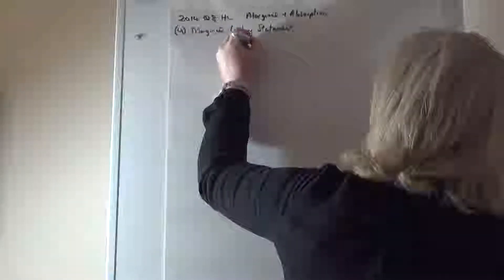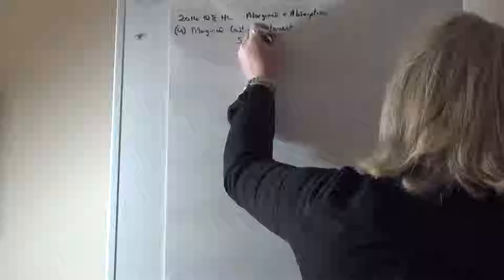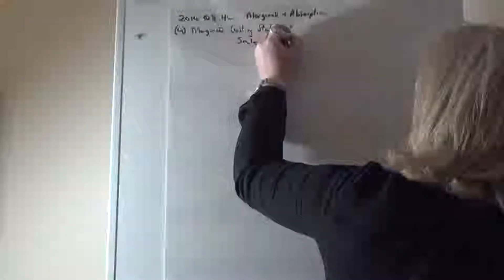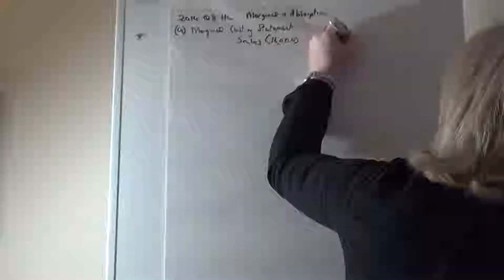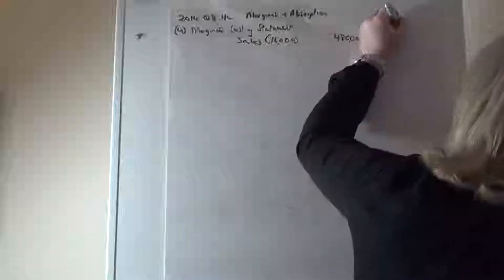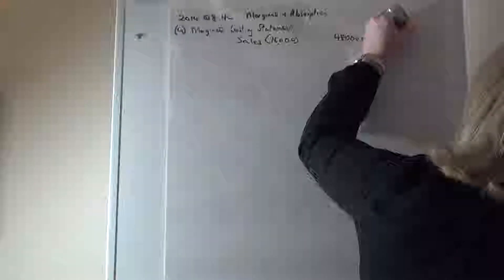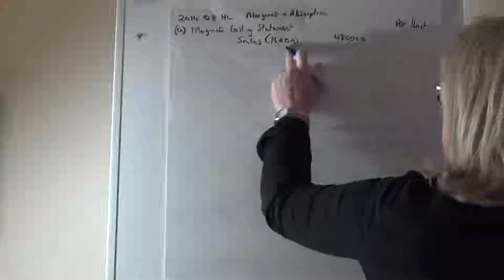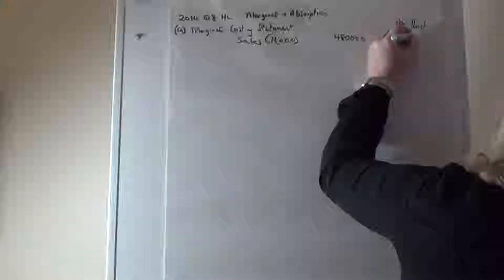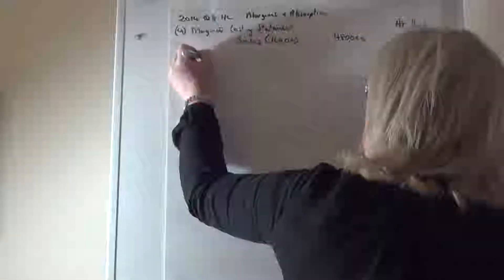The marginal costing statement starts with sales. We have 16,000 units and the sales figure is 480,000. I'm putting in a per unit column at the end: 480,000 divided by 16 tells me that each unit is being sold for 30 euros.